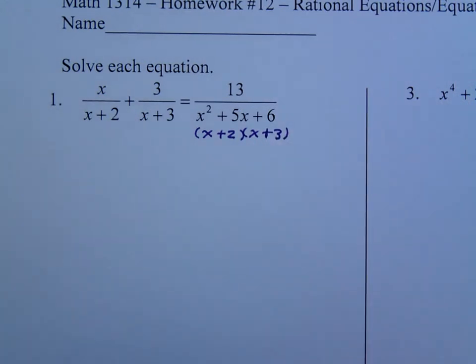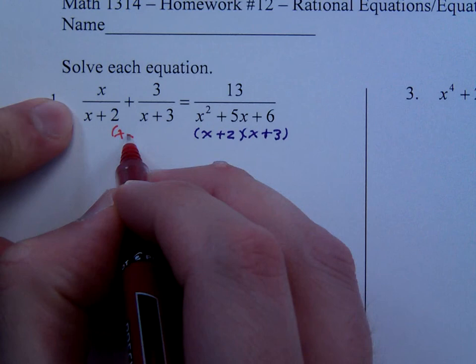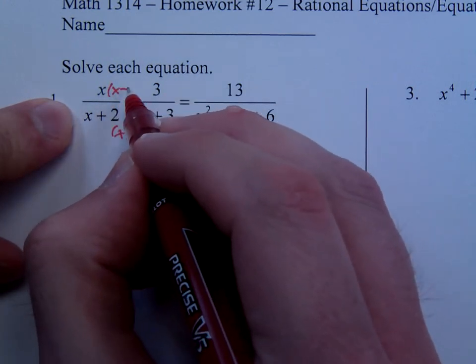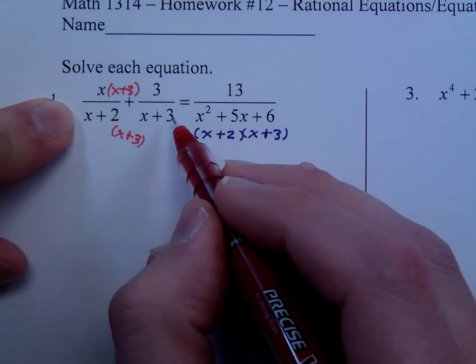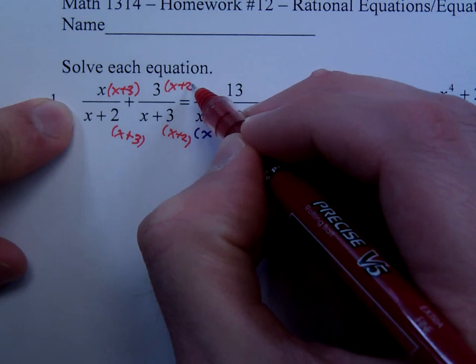We need to make sure that everybody has the same denominator. This denominator is missing the factor x plus 3, so we put that in both the numerator and denominator. This guy is missing the factor x plus 2, so that goes in both the numerator and denominator as well.